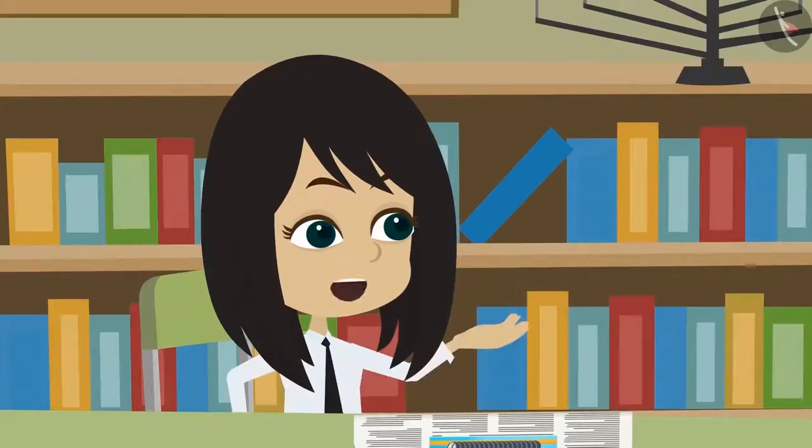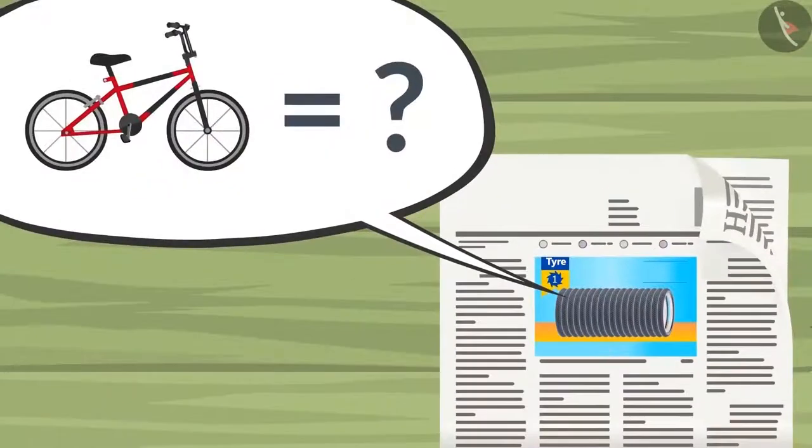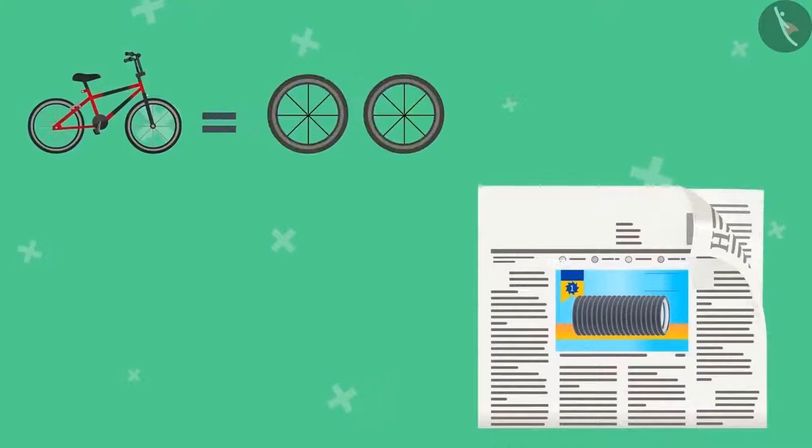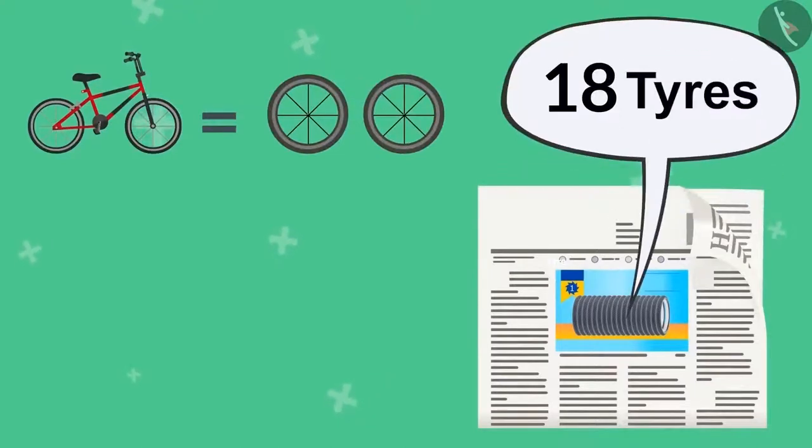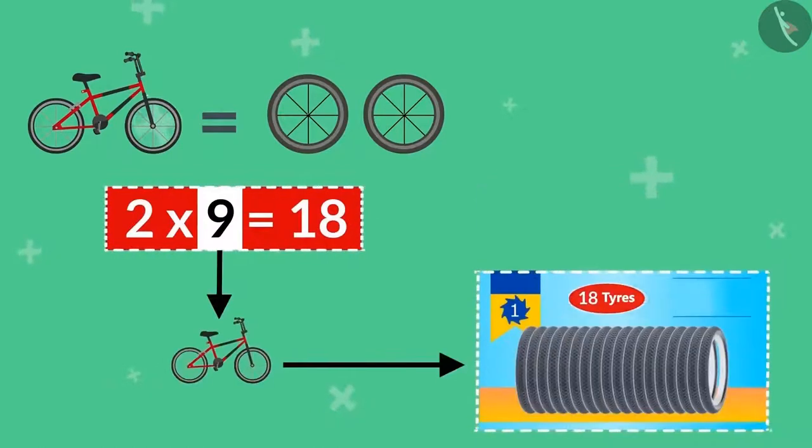If these are bicycle tires, can you tell me how many bicycles do they belong to? A bicycle has two tires. And there are a total of 18 tires. Two nines are 18. This means these tires belong to nine bicycles.